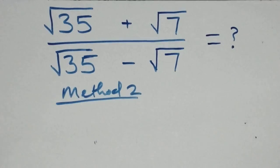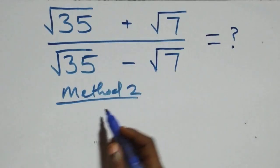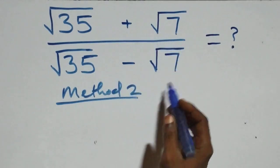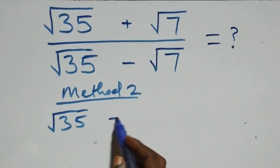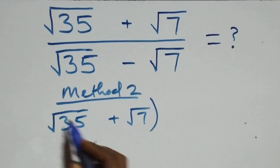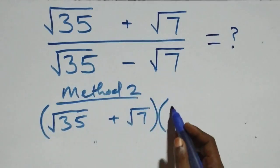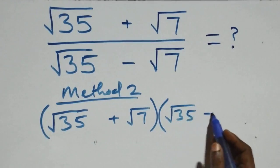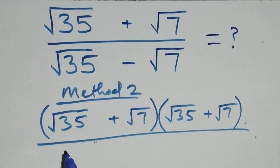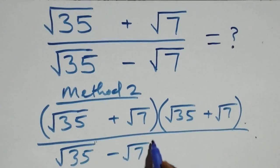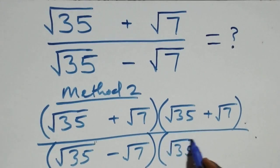Solving from the second method: from what we have here we can rationalize directly. That is, we multiply the numerator and denominator by the conjugate of the denominator, which is root 35 plus root 7, multiplied by root 35 plus root 7.